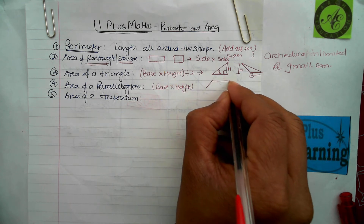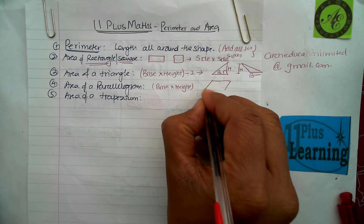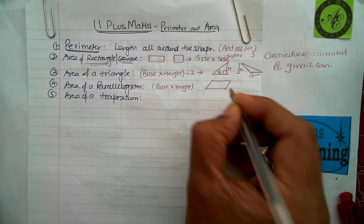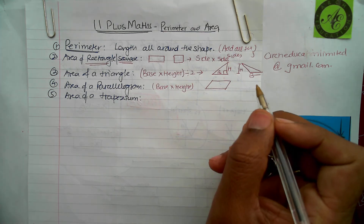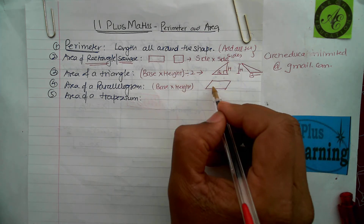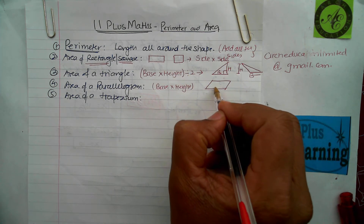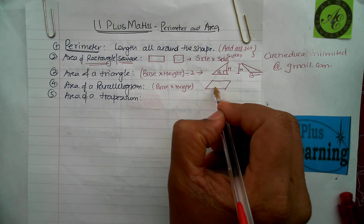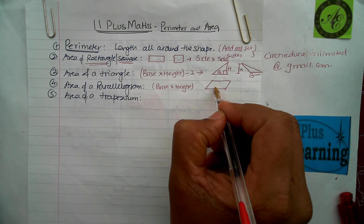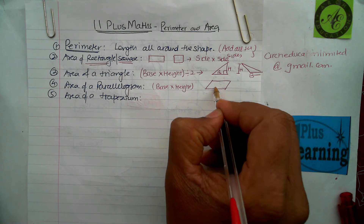For a parallelogram, it is just base times height — we don't divide by two. A parallelogram is essentially a tilted rectangle; that's the commonly used description in primary school.